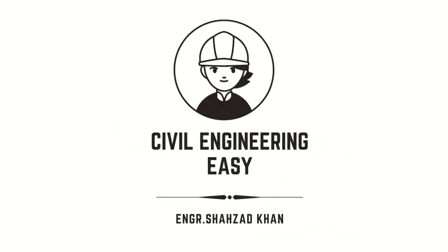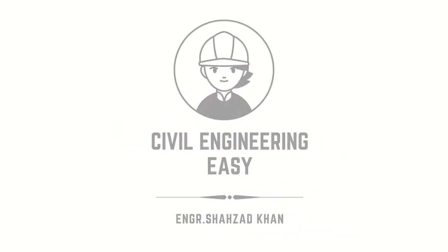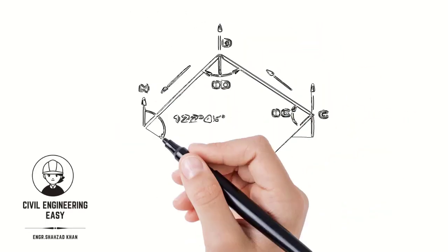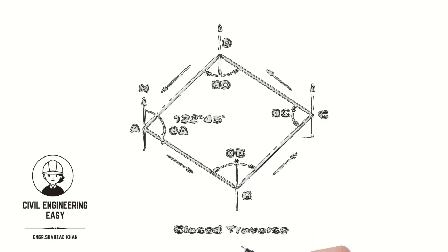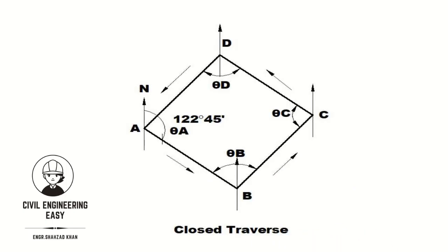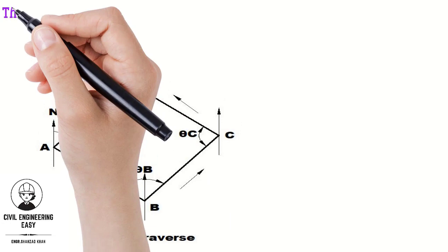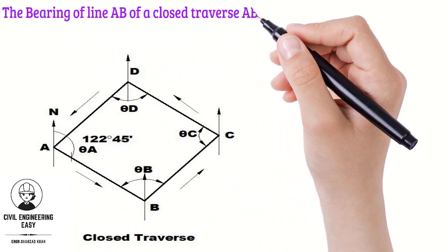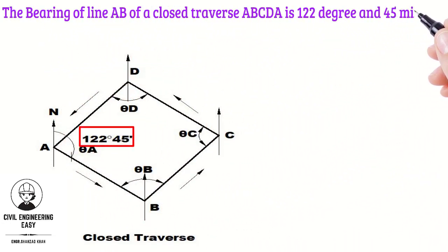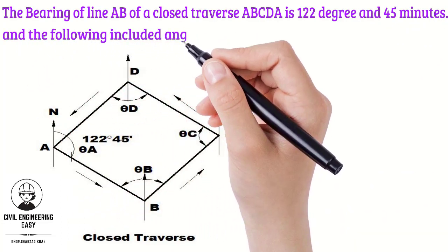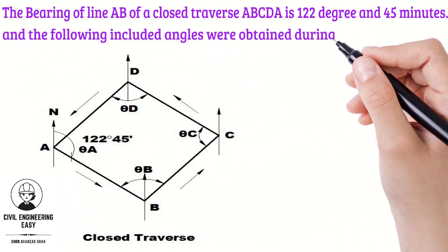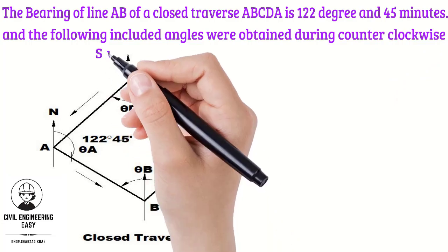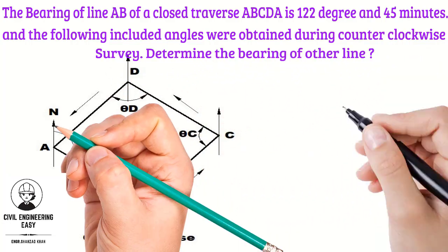Hi, welcome back to my YouTube channel Savile Engineering Easy. In this short video, I will discuss the complete procedure to solve the closed traverse. It is given that the bearing of a line AB of a closed traverse ABCDA is 122.45 min, and the following included angles were observed during counterclockwise survey. Determine the bearing of other lines.